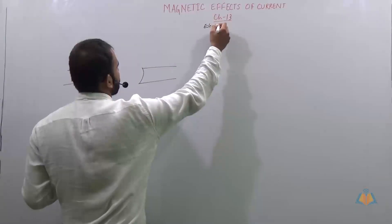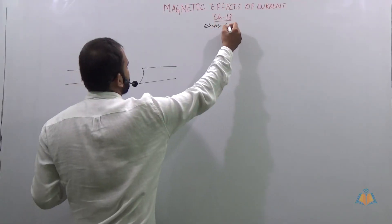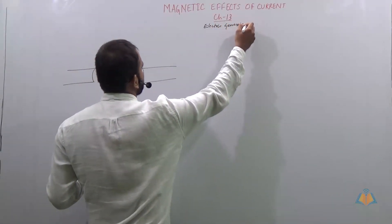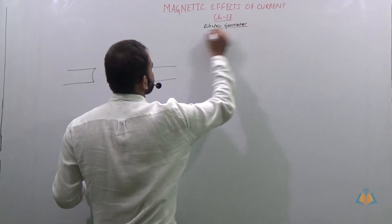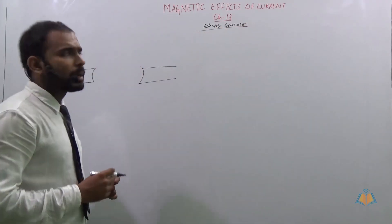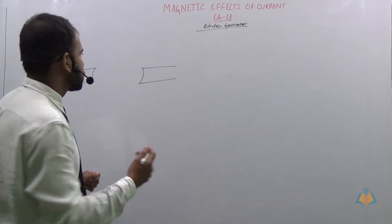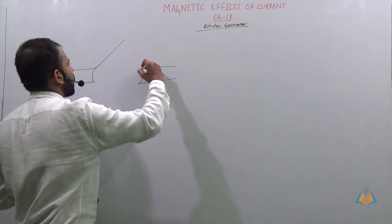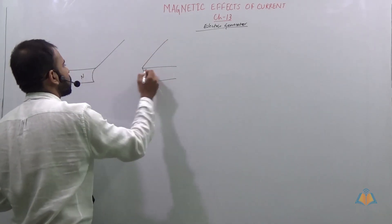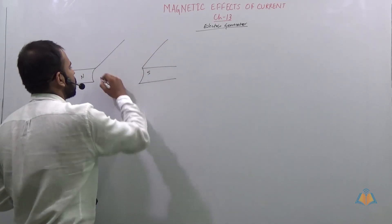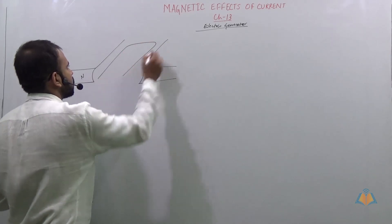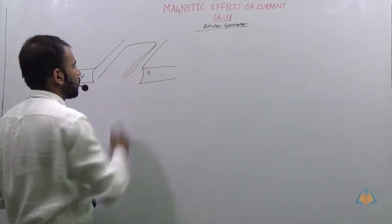Let's talk about the electric generator. By the name itself, we can determine that it is generating something. We have a north-south magnetic field and we have a coil.